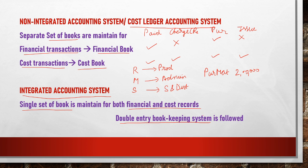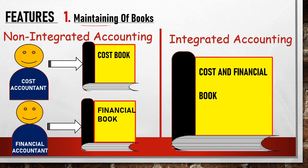Now we understand the features and differences between these two systems. The first feature is the maintaining of books. In an integrated accounting system, a single book is maintained to record all cost and finance-related transactions. But in a non-integrated accounting system, it is the responsibility of the cost accountant to record income and expenses in the cost books, while two separate sets of books are maintained overall.